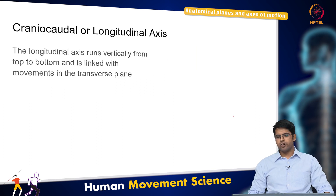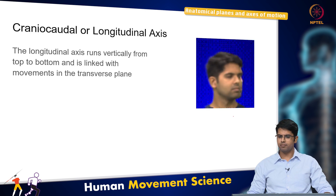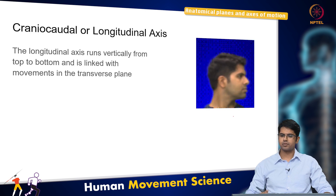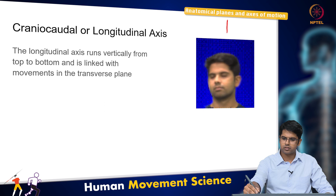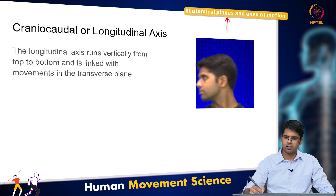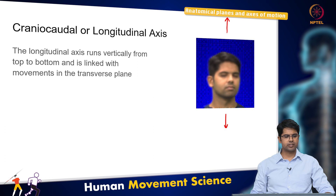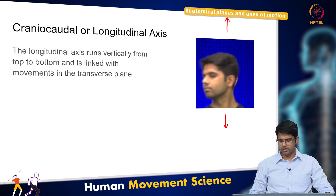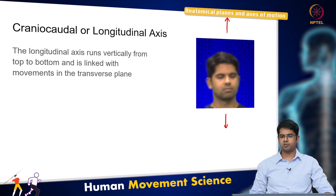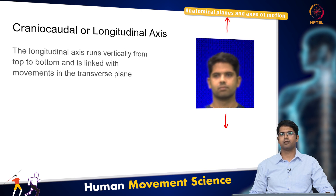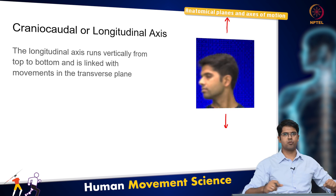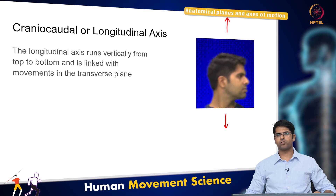The longitudinal axis runs vertically from top to bottom. The rotations happen along this direction, and rotations in the transverse plane are typically associated with the longitudinal axis — the same twisting movements as if you were to perform those.